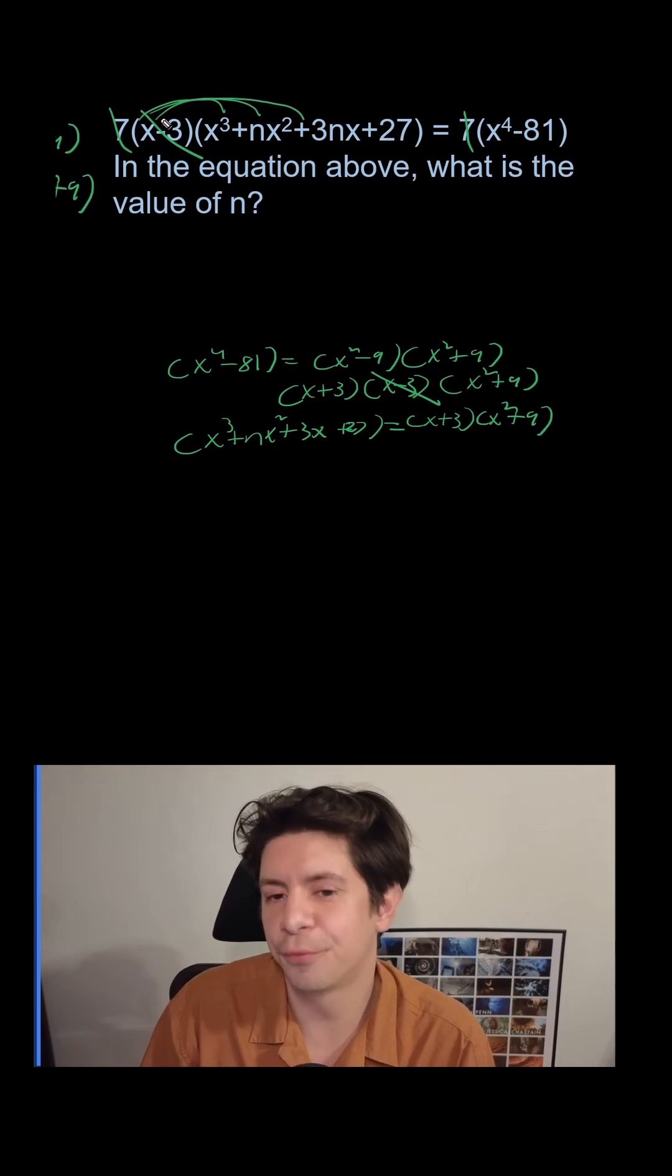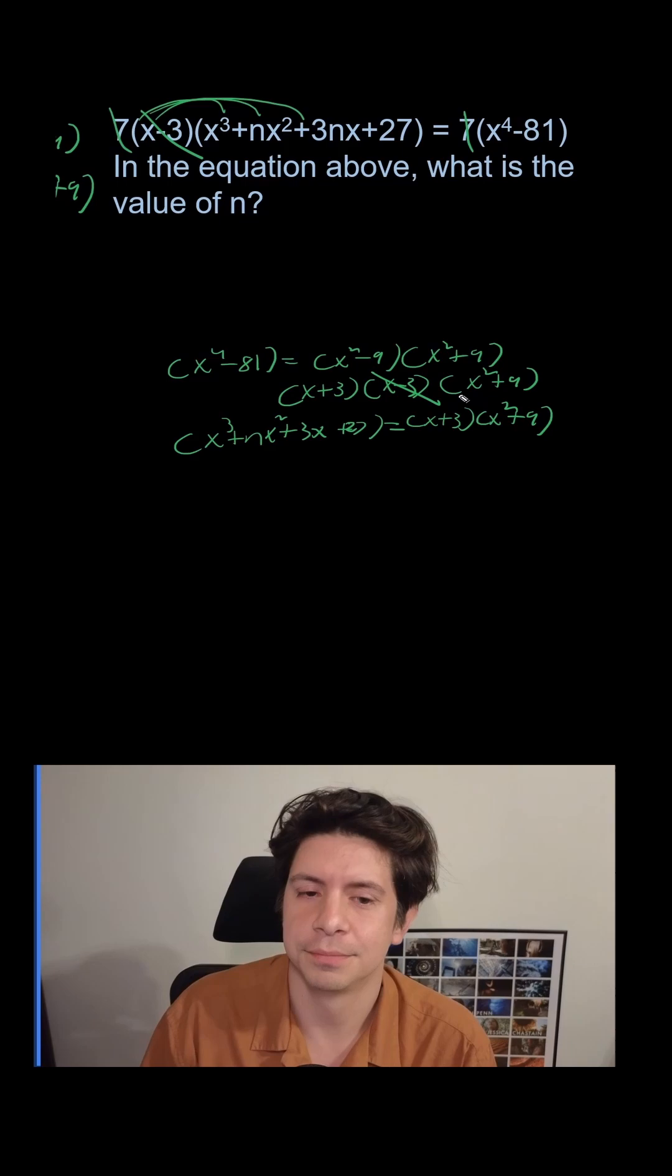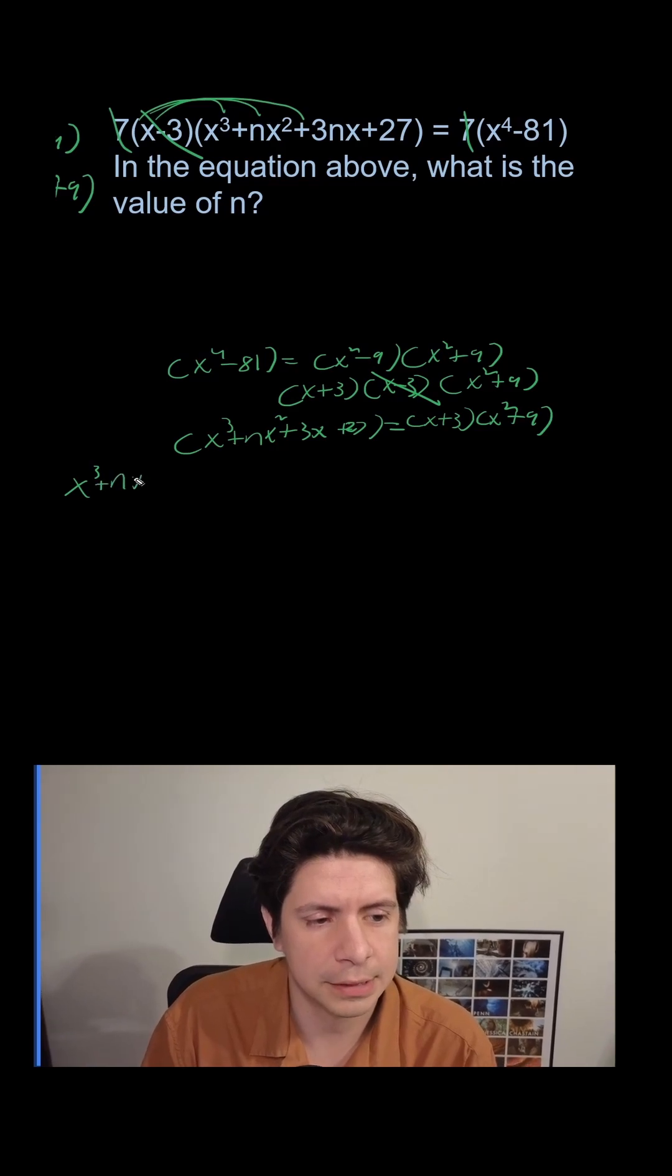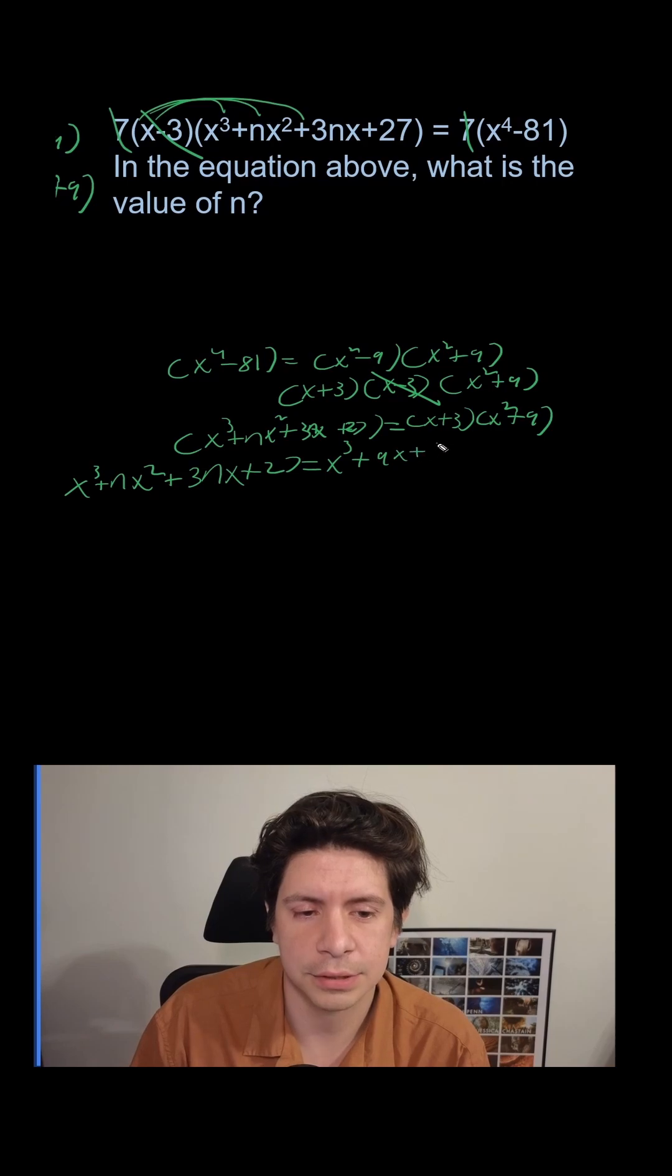I'm going to have to do what I was going to do before anyway, but now I just have to foil here. So I'm going to get, on the left, x³ + nx² + 3nx + 27, and on the right, x³ + 9x + 3x² + 27.